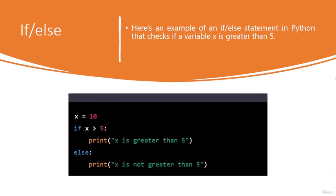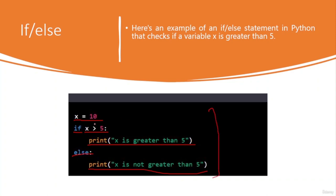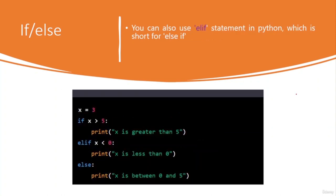In this example, x is declared as 10, so the condition 'x > 5' is true and the program prints 'x is greater than 5'. You can also use the 'elif' statement — short for else-if — to check multiple conditions. For example with x = 3: 'if x > 5: print("x is greater than 5"); elif x < 0: print("x is less than 0"); else: print("x is between 0 and 5")'. Since x is 3, both first conditions are false and the else block executes, printing 'x is between 0 and 5'.